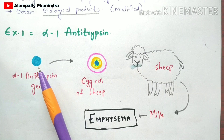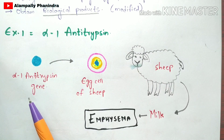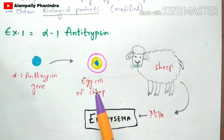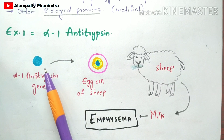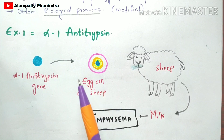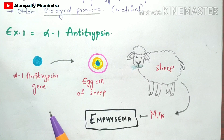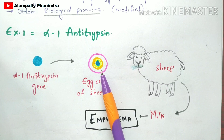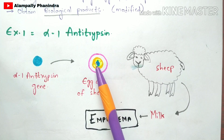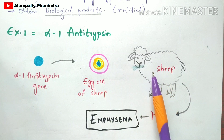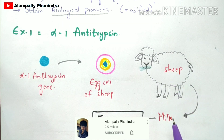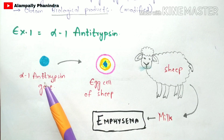The blue color in the diagram represents the alpha-1 antitrypsin gene. We take an egg cell belonging to a sheep, and we inject this alpha-1 antitrypsin gene into the egg cell using the microinjection technique. This egg cell, now containing the alpha-1 antitrypsin gene, is then implanted into the sheep. We know that a sheep produces milk.